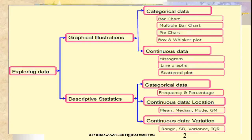Whenever you are exploring the data, it can be expressed as graphical illustrations — either as categorical data or continuous data. For categorical data, we generally use a bar chart, multiple bar chart, pie diagram, or box and whisker plot. For continuous data, we could use a histogram, line graph, scatter plot, etc.